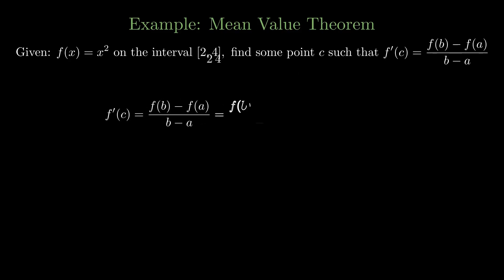So take the formula F(b) minus F(a) over b minus a. B will be 4, A will be 2. Find the function values respectively. We know that 16 minus 4 over 4 minus 2 is what we're going to get, and 6 is our average rate of change.